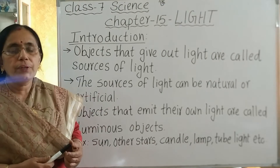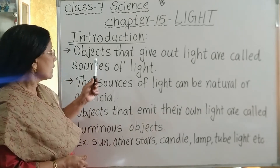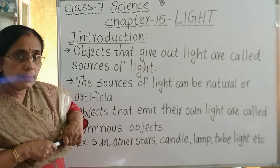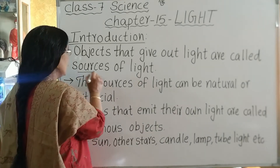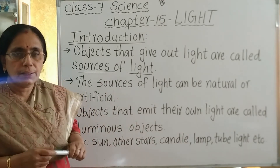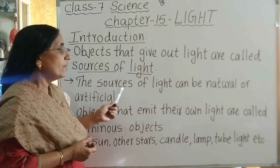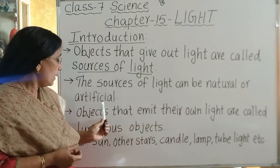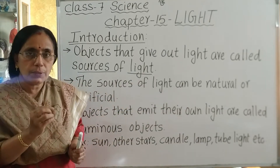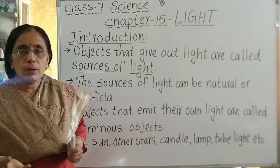Now, from where do we get light? The objects that give out light are called sources of light. Sources of light — objects that give out light — can be natural or artificial, meaning naturally occurring or manmade.